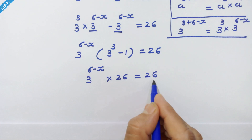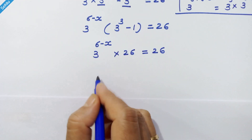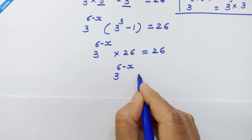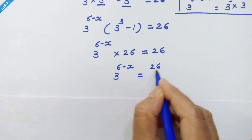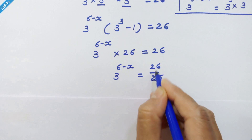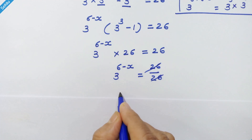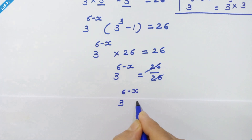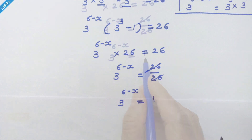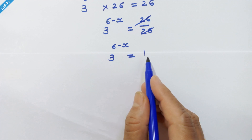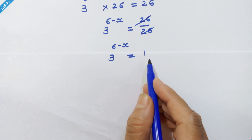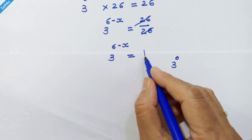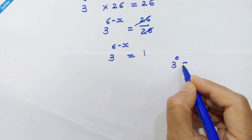Let's move the 26 to the right-hand side. So we have 3 raised to (6 minus x) is equal to 26 upon 26. These cancel, giving us 3 raised to (6 minus x) is equal to 1.